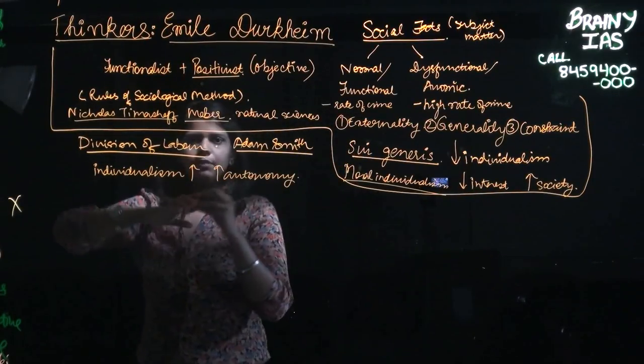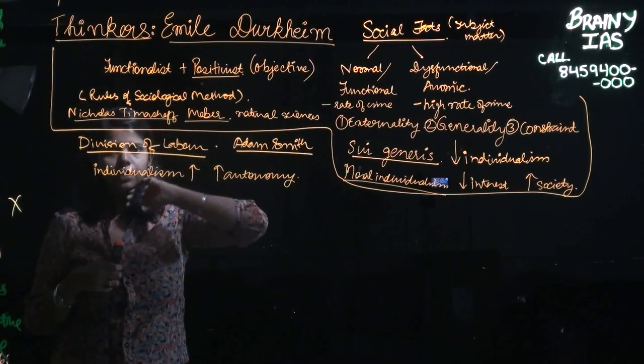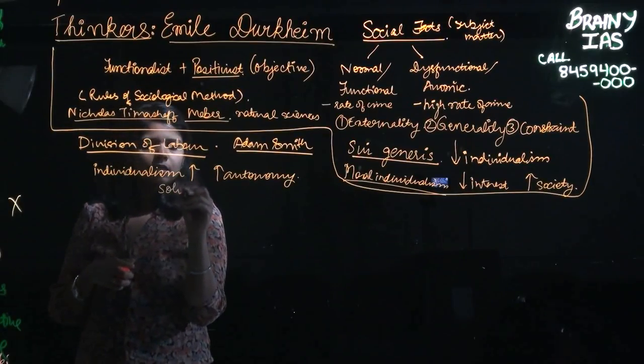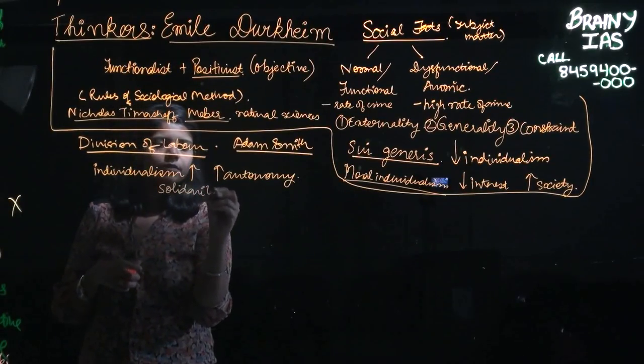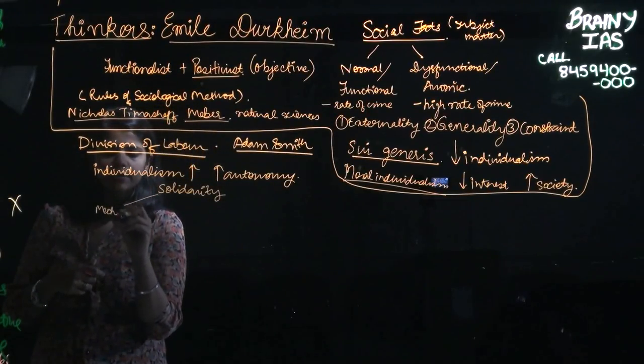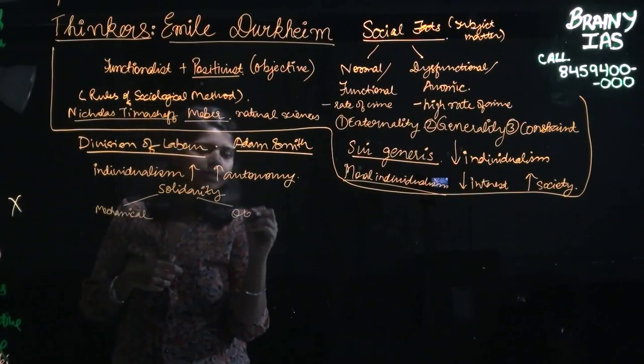So in this term, how people interact with themselves, etc., he talks about solidarity between people in changing scenarios. And he talks about two types of solidarity: mechanical solidarity and organic solidarity.